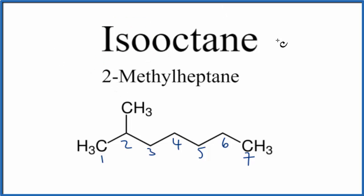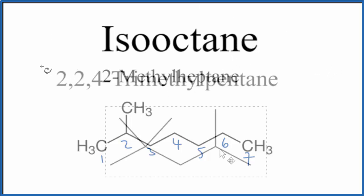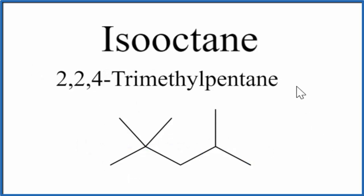However, because isooctane is a very common ingredient in gasoline, it actually doesn't refer to 2-methylheptane — it refers to a different compound. Let's take a look at that. When we're talking about isooctane, the structure for isooctane is usually what we call 2,2,4-trimethylpentane.